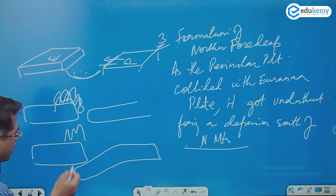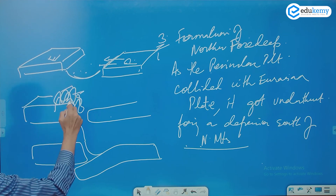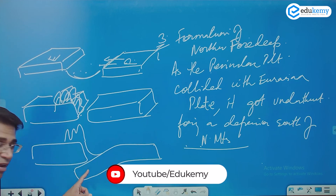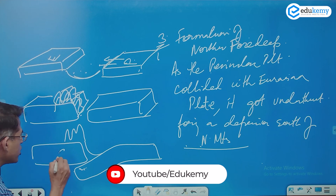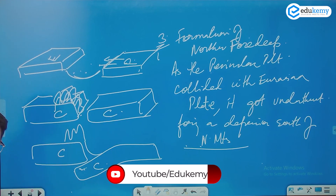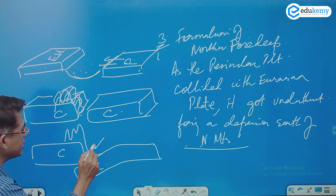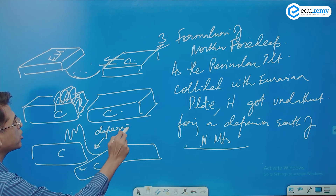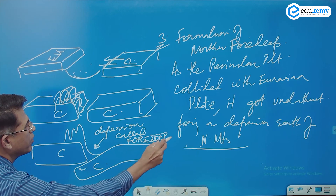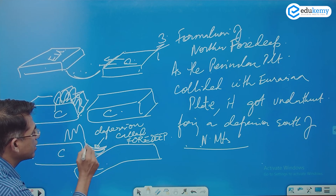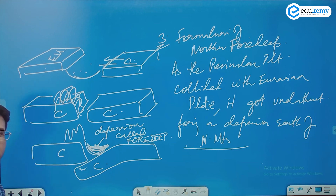This depression is the Tethyan Foredeep — the foredeep. Remember, this is not subduction; it is called under-thrusting or under-riding. This is a continent-continent (CC) collision. The left one is the Eurasian plate, and here the depression forms. Rivers from the Himalayas come and deposit sediments into this depression, and this becomes the Northern Plains.